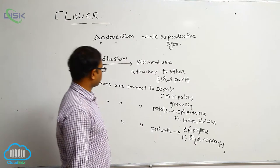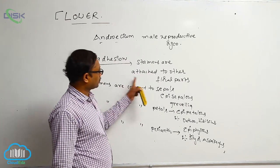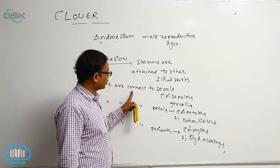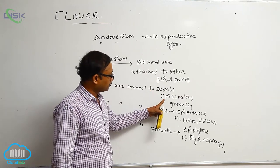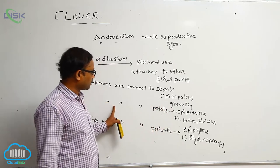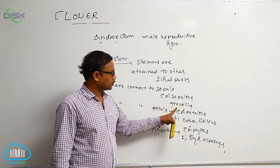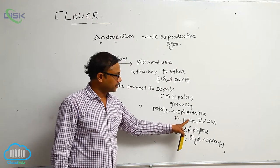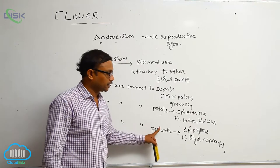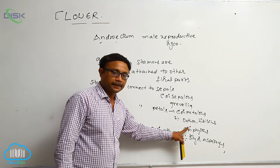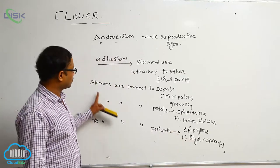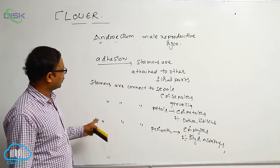So, these are the adnation conditions. Stamens attached to other floral parts is known as adnation. Stamens connected to sepals is Episepalous — example: Grevillea. Stamens connected to petals is Epipetalous — example: Datura and Hibiscus. Stamens connected to the perianth is Epiphyllous — example: Lily and Asparagus. These are the most important points.